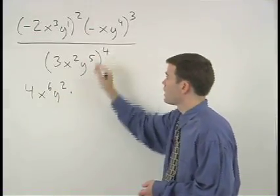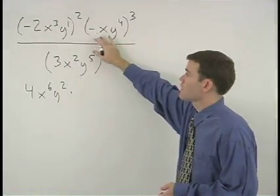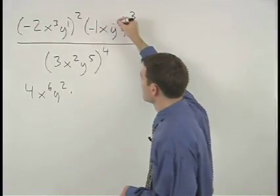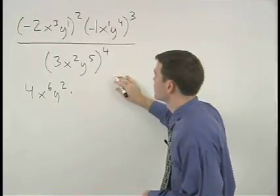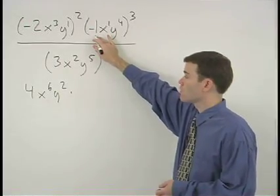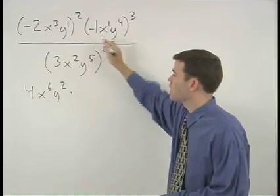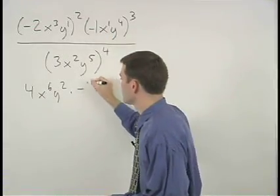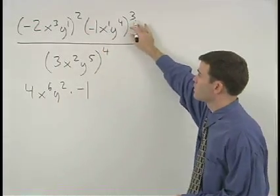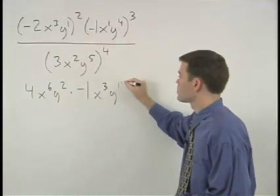This is all multiplied by negative xy to the fourth, cubed. Think of the negative as negative 1 and x as x to the first. So we cube our coefficient of negative 1, which is negative 1 times negative 1 times negative 1, or negative 1, and multiply each of our exponents by 3 to get x to the third, y to the 12th.